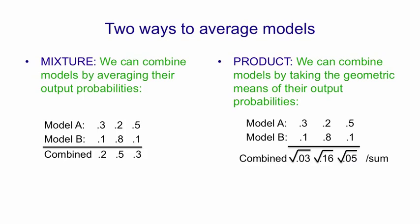You'll notice that in a product, a small probability output by one model has veto power over the other models.